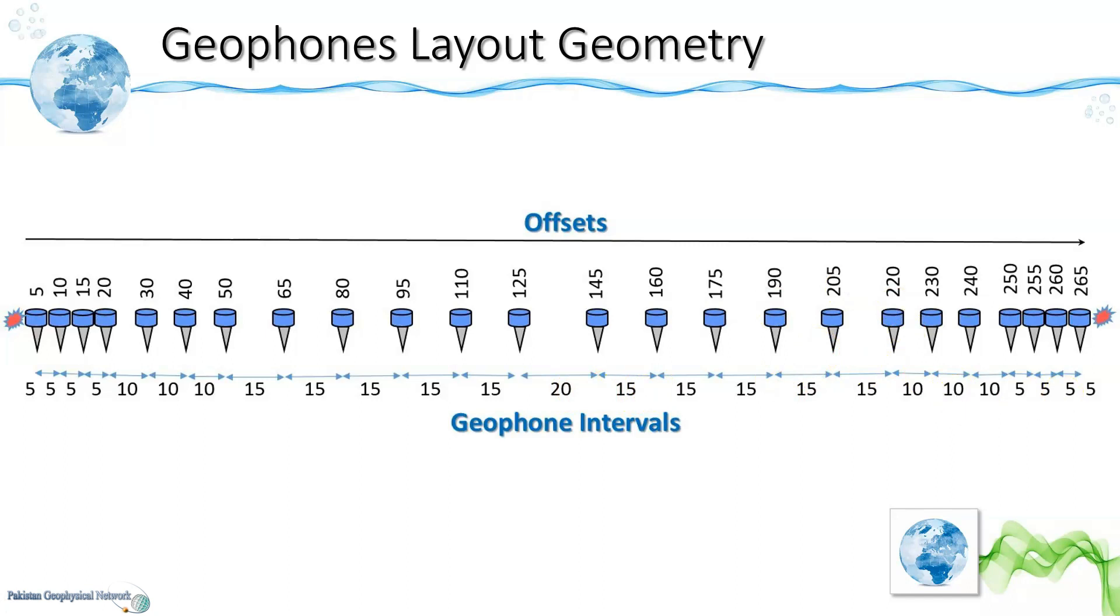This has been done because we want to pick first arrivals for the direct waves. As we know the direct waves can only be recorded before the crossover distance so usually the crossover distance would be around 20 meters. So if we set up the picket interval to 10, it means we would only be able to record the first arrival from the direct waves on only the first geophone.